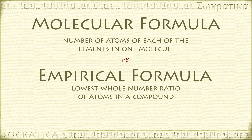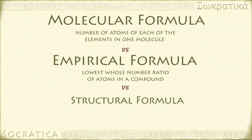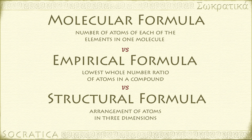The molecular formula is sometimes called the true formula, because it tells you how many of each kind of atom are actually present in the molecule. It's important to note that in a molecule, the arrangements of the atoms in three dimensions makes a big difference. Neither the molecular formula nor the empirical formula spell out what the molecule looks like in three dimensions. For that we need a structural formula, and we'll save that complicated idea for another video.